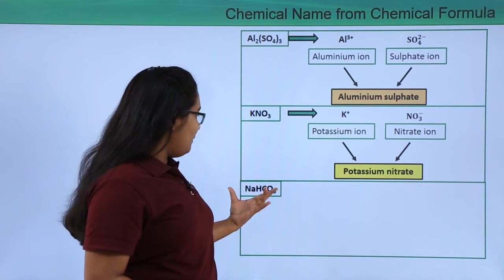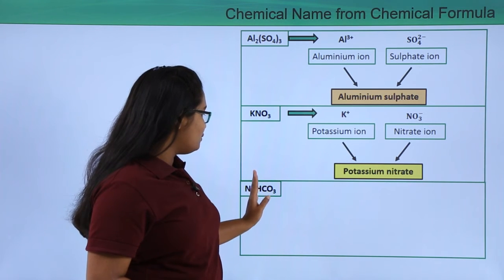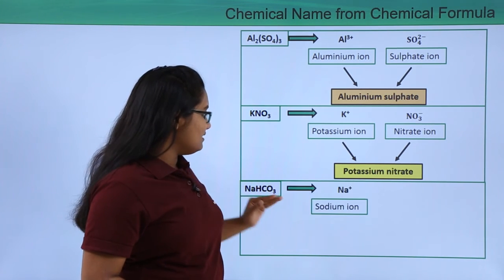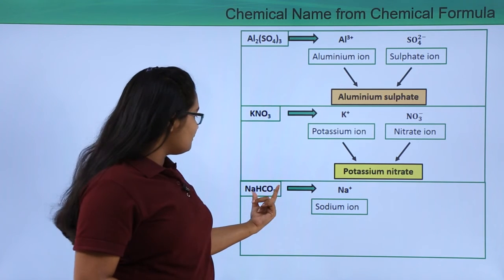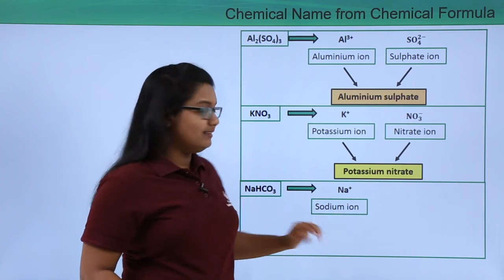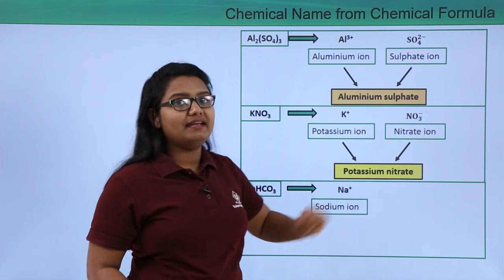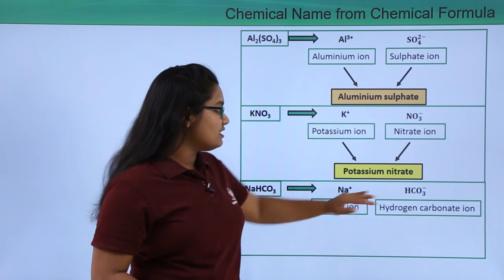Again I have a big compound which is NaHCO3. Now this compound we can dissociate into two ions, that is one is sodium that is Na, and the rest of the part serves as the negative ion that is HCO3-.